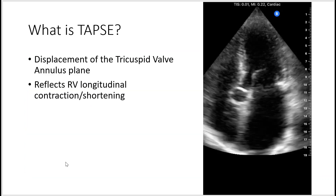What is TAPSE? It is the displacement of the tricuspid valve annulus plane, and this reflects the RV longitudinal contraction during systole.